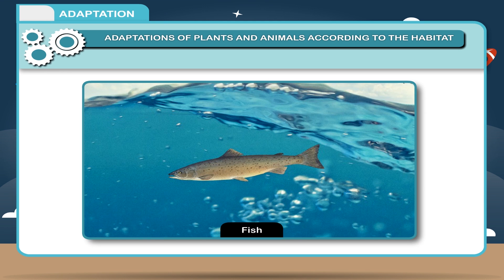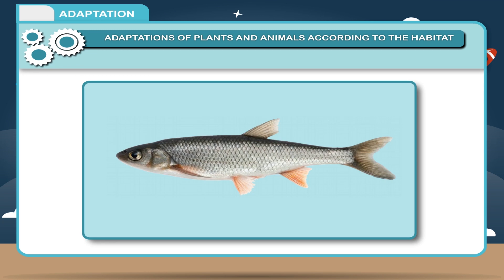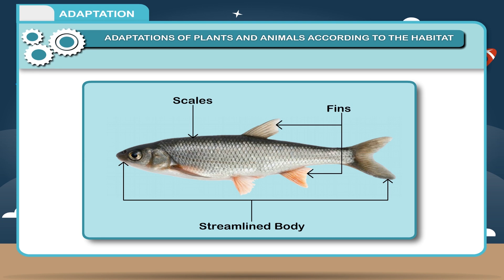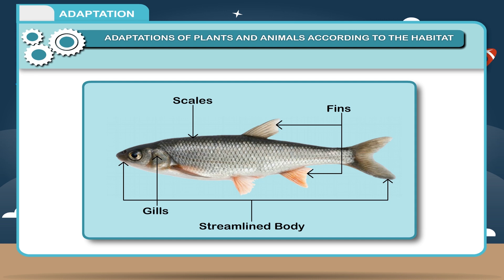For example, a fish has the following features suitable for its aquatic life: 1. Streamlined body which helps in movement. 2. Scales which protect the internal parts. 3. Fins and tails help in swimming. 4. Gills help the fish to take in oxygen.